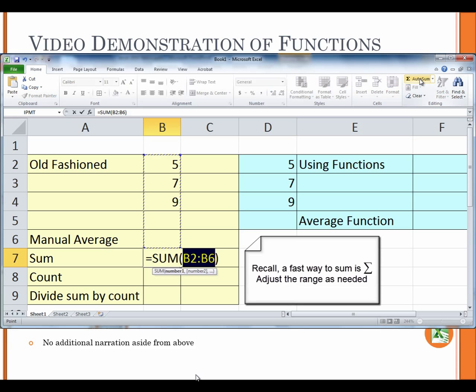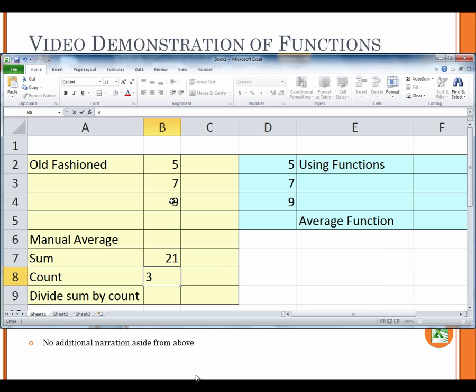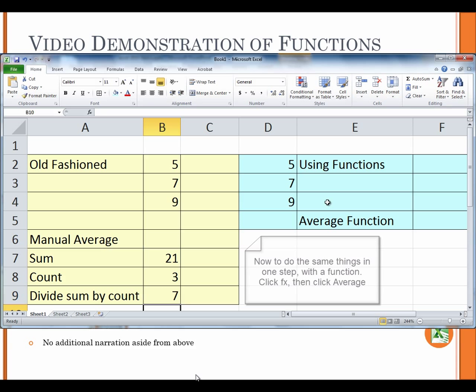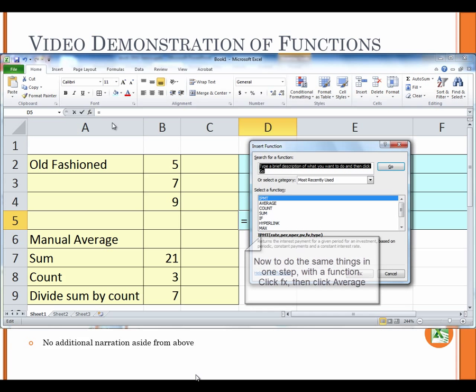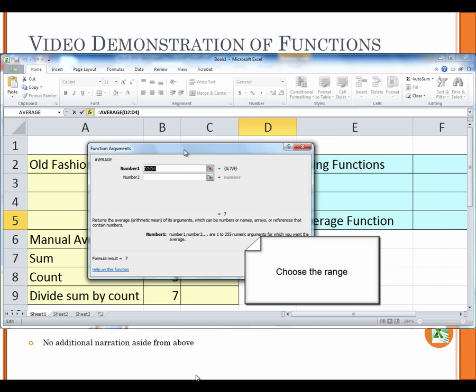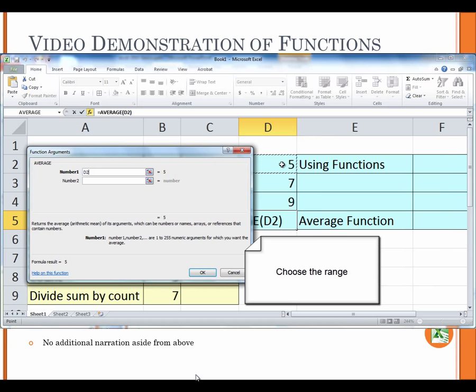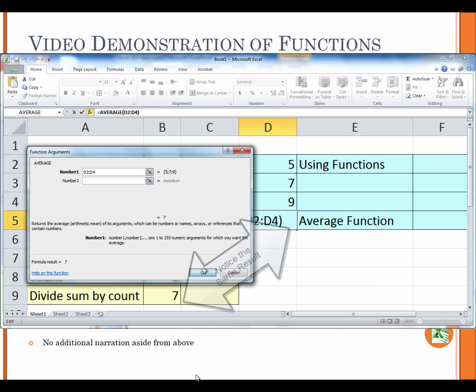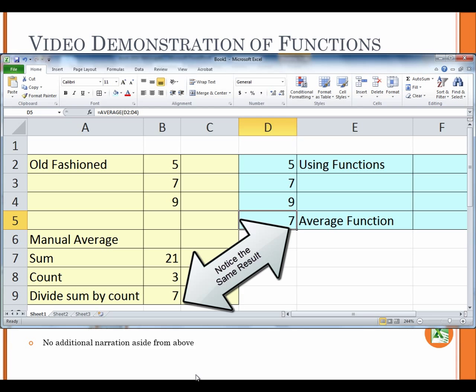A video section follows to demonstrate. Recall, a fast way to sum is sigma. Adjust the range as needed. Count 3. Divide sum by count equals B7 divided by B8. Now to do the same things in one step with a function. Click f of x, then click average. Choose the range. Notice the same result.